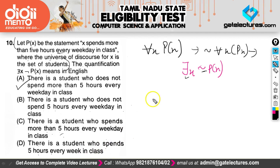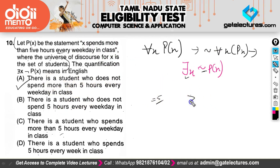Another option talks about exactly 5 hours, which is also not right. We need to negate 'more than 5 hours,' so it has to be 'not more than' — that is, less than 5 hours. That is why only statement A is clearly correct.